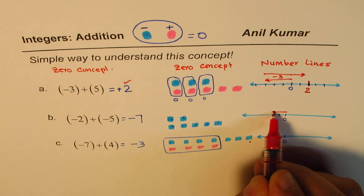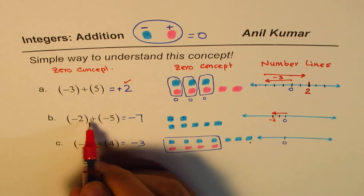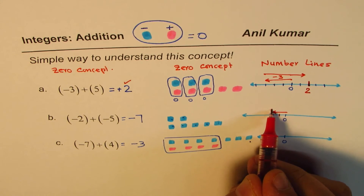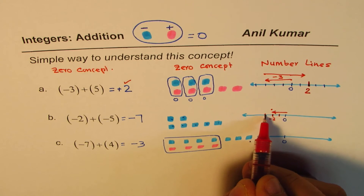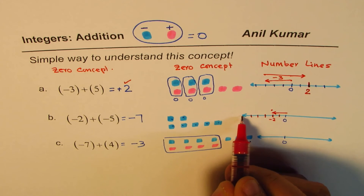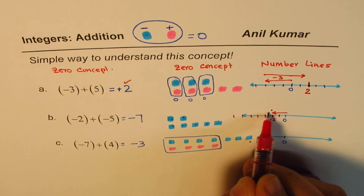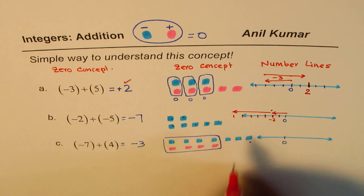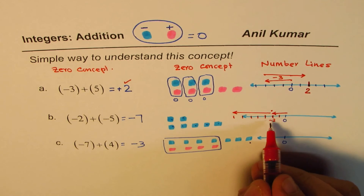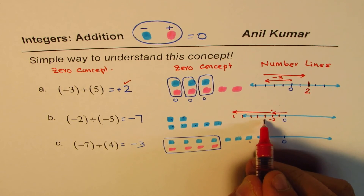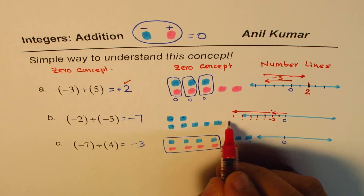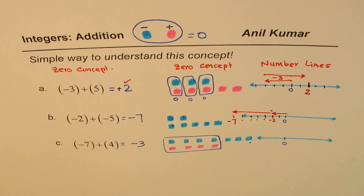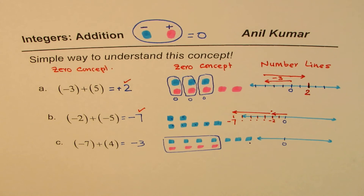Next: minus two minus five. We go two units left to reach minus two, then five more steps to the left — one, two, three, four, five — reaching minus seven. So minus two plus minus five equals minus seven.